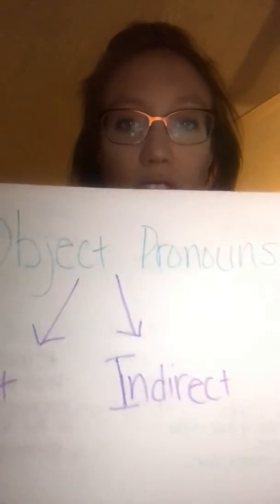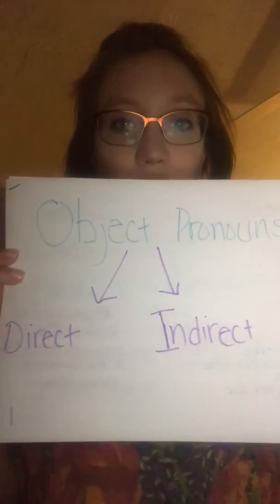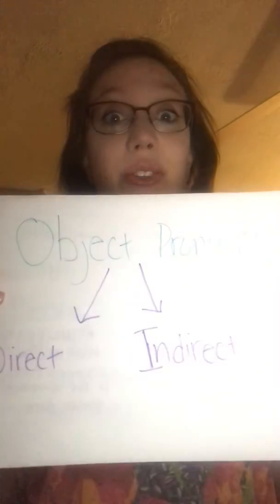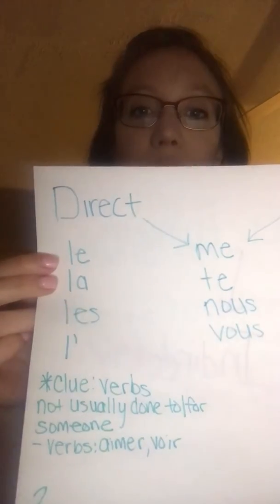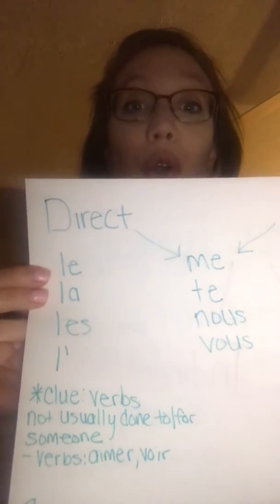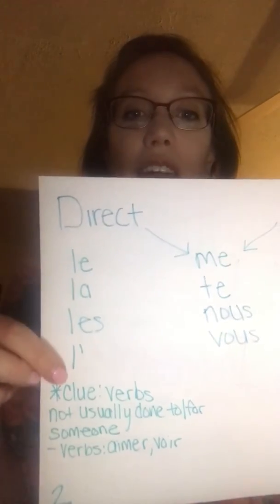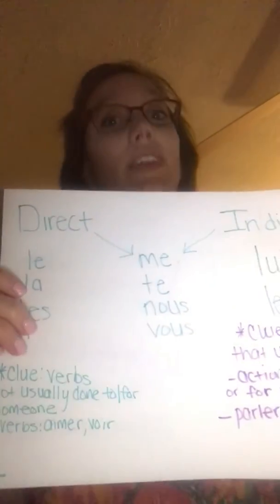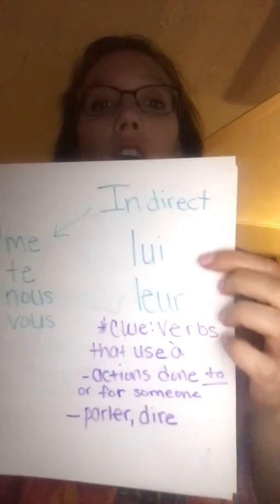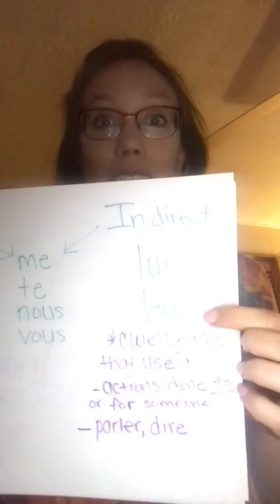Object pronouns in French — there are two types: direct and indirect. Your direct object pronouns are le, la, les, and l'. Your indirect object pronouns in French are lui and leur.